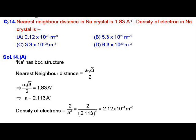The volume of a BCC crystal is a³. So if we have to find the density of electrons, we will put 2 upon 2.113 whole cube, and the density of electrons will be calculated as 2.12 × 10²⁹ per meter cube.